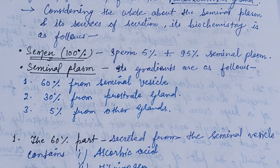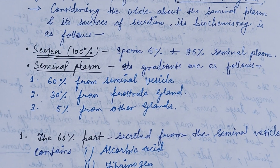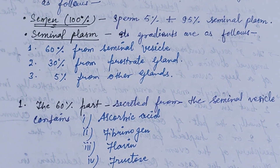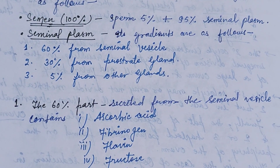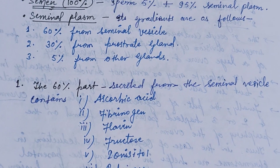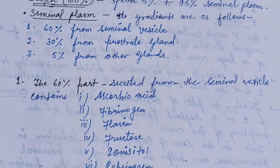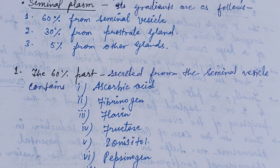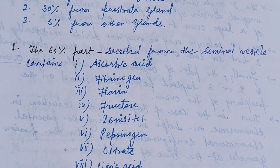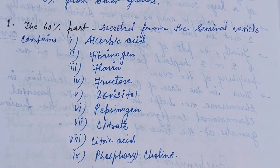The semen contains 5% sperm and 95% seminal plasma. The seminal plasma contains 60% from the seminal vesicle, 30% from the prostate gland, and 5% from other glands.